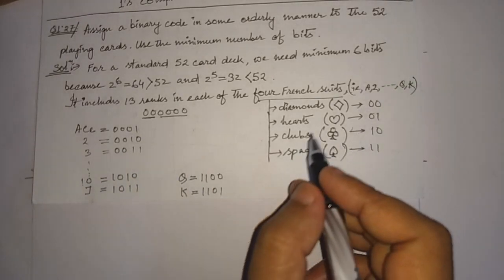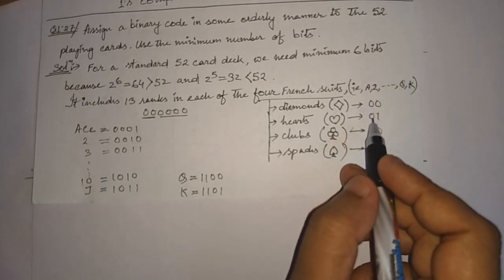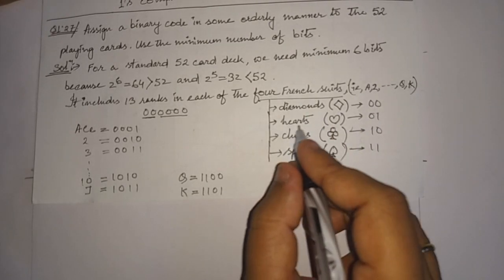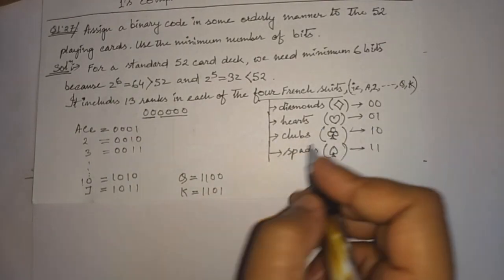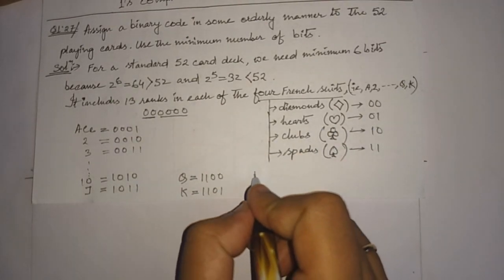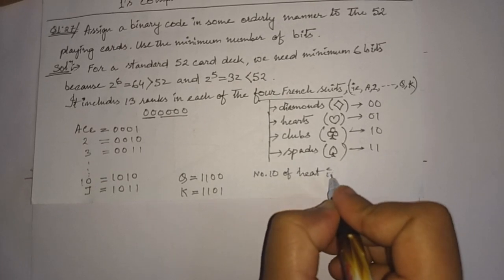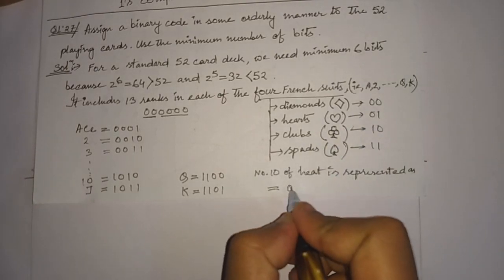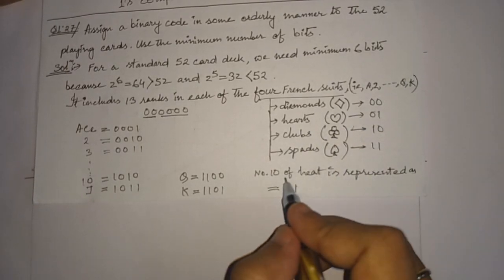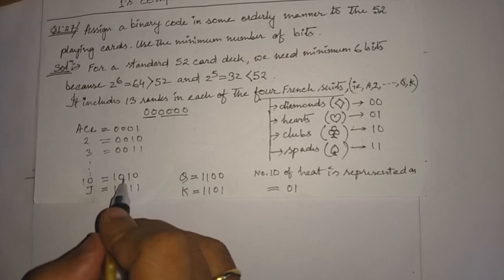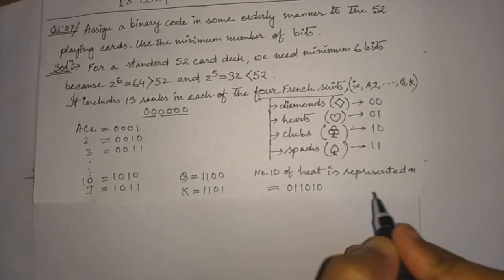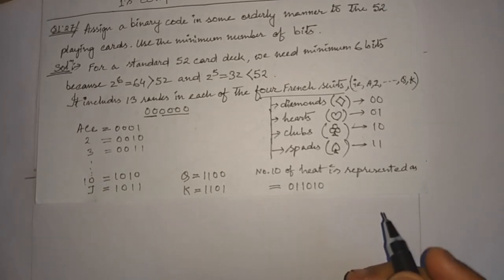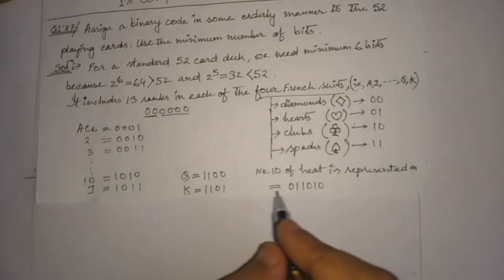Let us understand how we represent the card number 10 of hearts. For hearts, the most significant 2 bits are 01. The number 10 is represented as 1010 in the least significant bits. So the 10 of hearts is represented as the 6-bit code 01 1010. In this way, we can represent all 52 different cards using 6 bits.